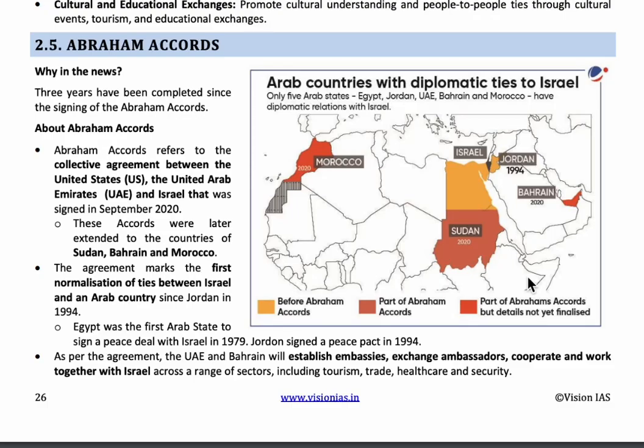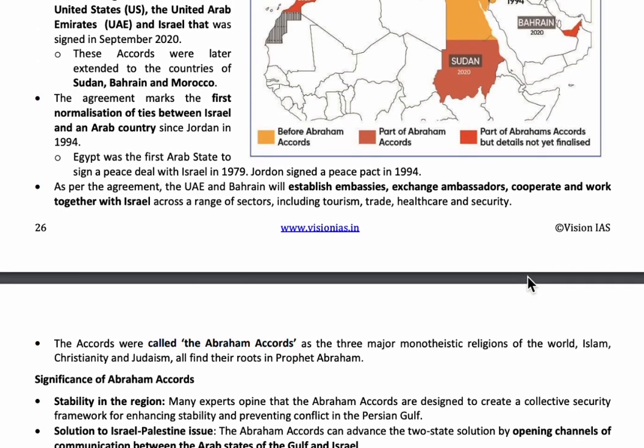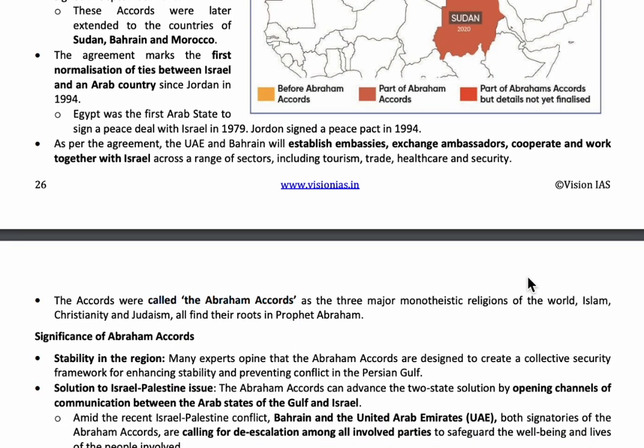The topic is Abraham Accords. The Abraham Accords are a series of agreements between Israel and Arab countries to maintain peaceful relations with each other. The name Abraham is derived from the prophet Abraham, who is the root of the three religions: Islam, Christianity, and Judaism. The Abraham Accords were introduced by the US to make peaceful relations between Israel and Arab countries.